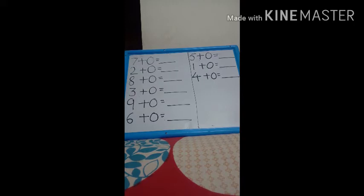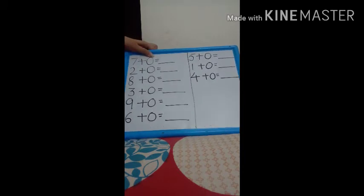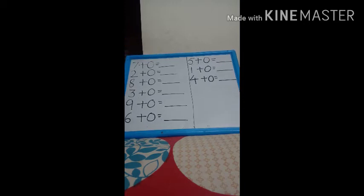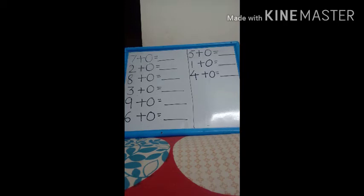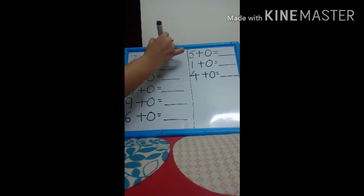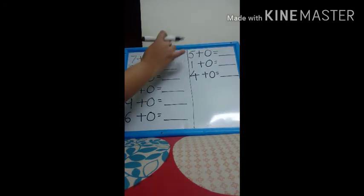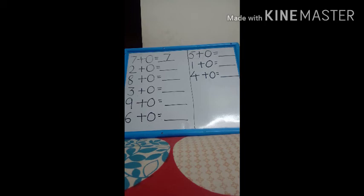So, let's start some operations. See, which number is this? Seven plus zero. Now, zero means nothing. Then, if zero means nothing, then if I add seven plus zero, then what will be the answer? The same number. Same number will be the answer.